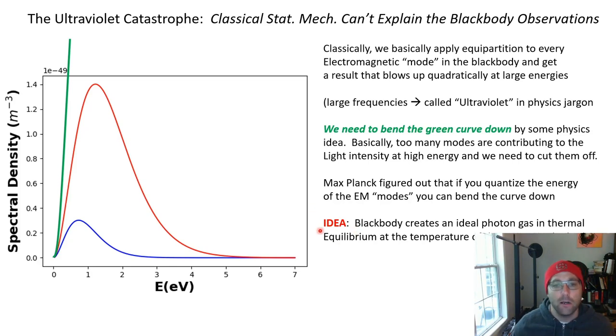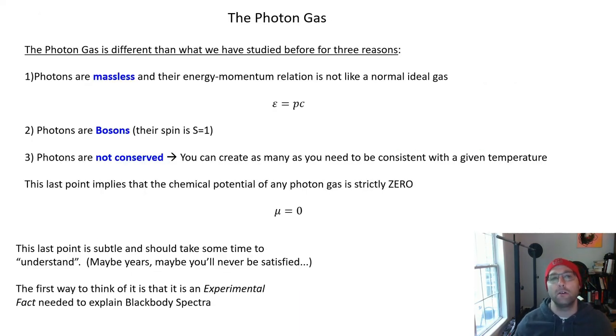And so our idea for today, and is ultimately the correct idea, is that a blackbody is a piece of matter that is sort of in thermal equilibrium with an ideal photon gas. And what we're going to do is now calculate the statistical mechanics of that ideal photon gas. Before we do that, we need to point out there are some very significant differences between the photon gas and an ordinary gas, say an ideal gas, like we've talked about a lot in the past.